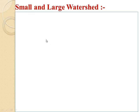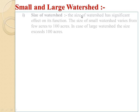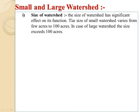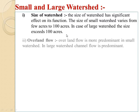Coming to small and large watershed. Number 1, size of watershed: the size of watershed has a significant effect on its function. The size of a small watershed varies from a few acres to 100 acres. In the case of a large watershed, the size exceeds 100 acres.